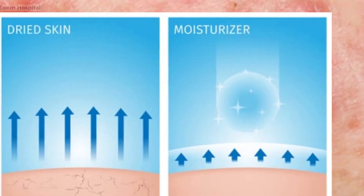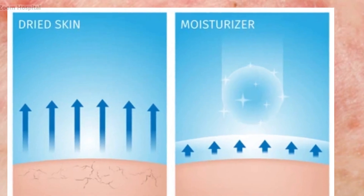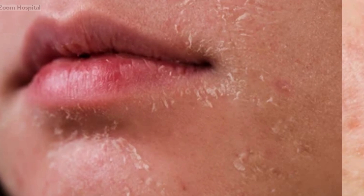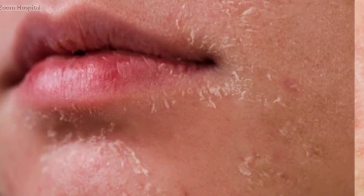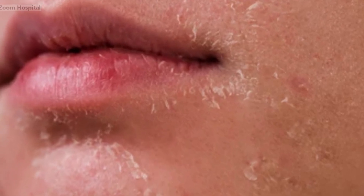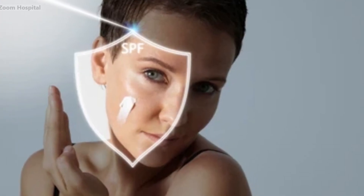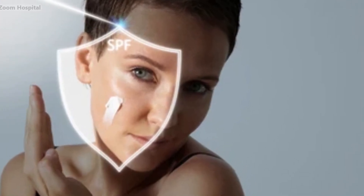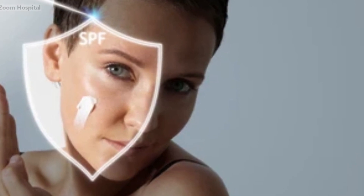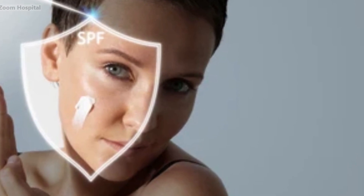Step 6: Moisturize and protect. While benzoyl peroxide can effectively treat pimples, it can also dry out your skin. To counteract this, use an oil-free, non-comedogenic moisturizer after applying benzoyl peroxide. This helps keep your skin hydrated and minimizes dryness and flaking. Additionally, always apply sunscreen with at least SPF 30 during the day to protect your skin from potential sun damage.